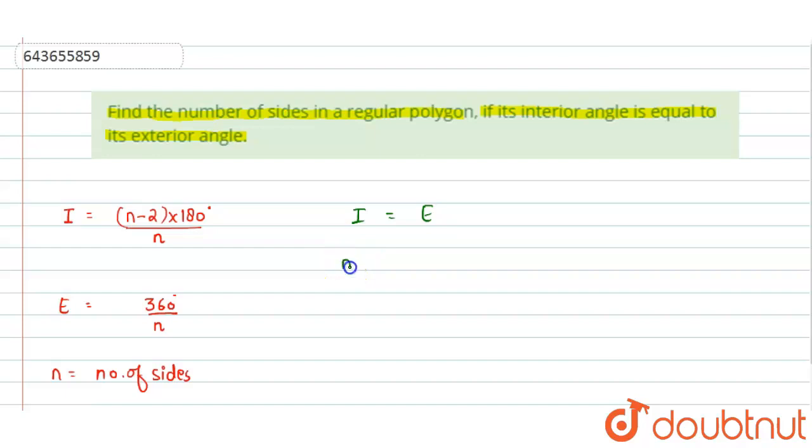So we can write (n-2) × 180° divided by n is equal to 360° divided by n.